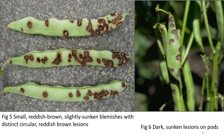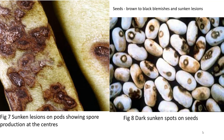Figure 5 shows slightly sunken blemishes with distinct circular reddish-brown lesions. Figure 6 also illustrates the dark sunken lesions on the pods. Figure 7 depicts the sunken lesions on pods showing spore production at the center, which looks pinkish in color. The symptoms appear as brown to black blemishes and sunken lesions, as shown in Figure 8.